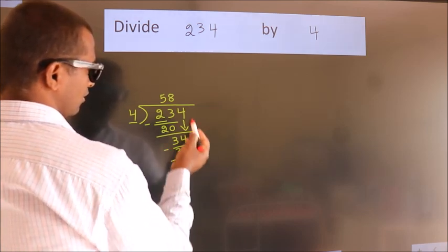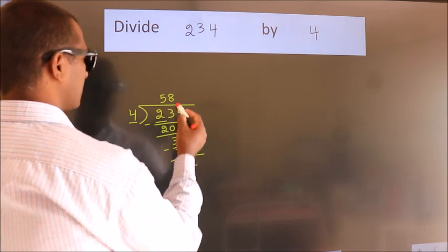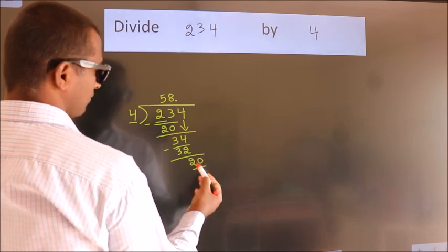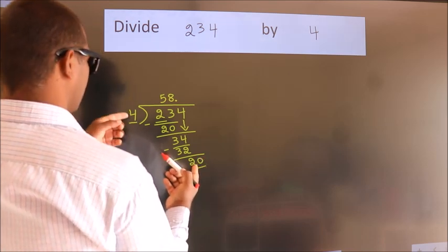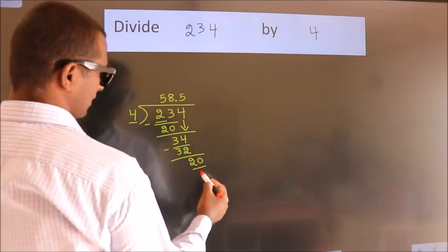After this, no more numbers to bring down. So what we do is we put a dot and take 0. So 20. When do we get 20 in the 4 table? 4 fives, 20.